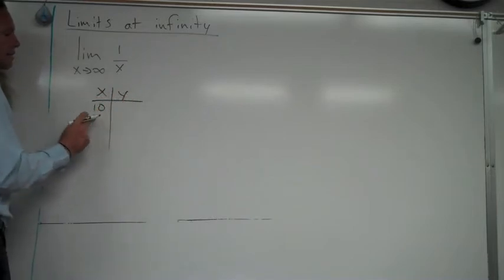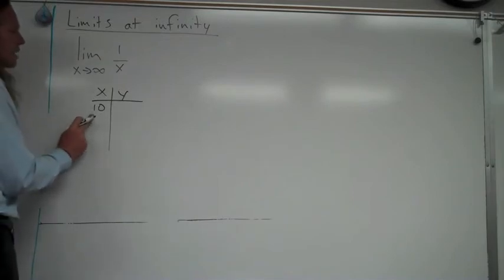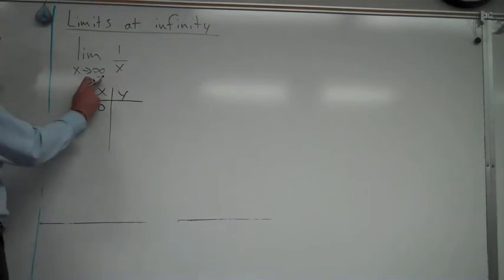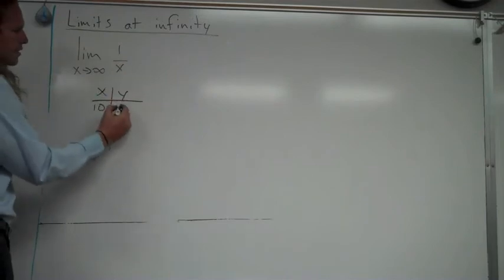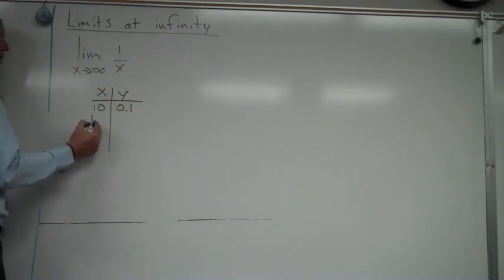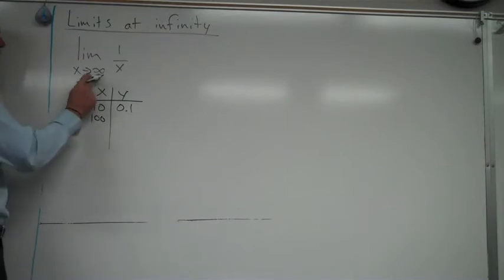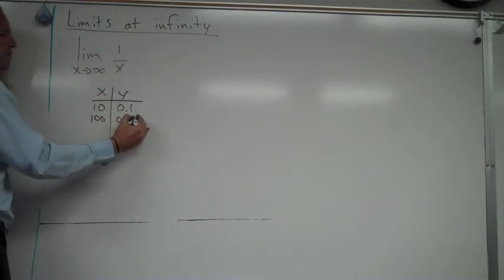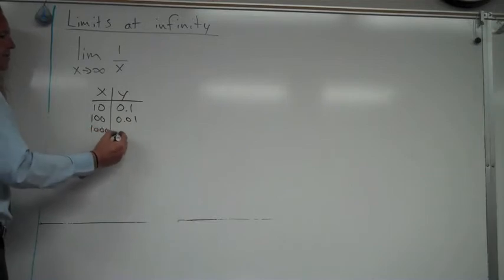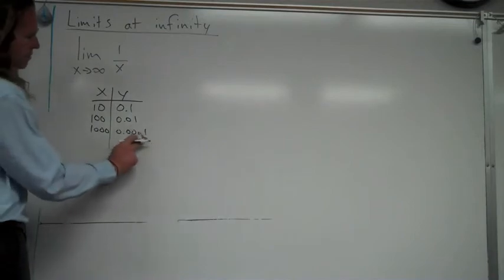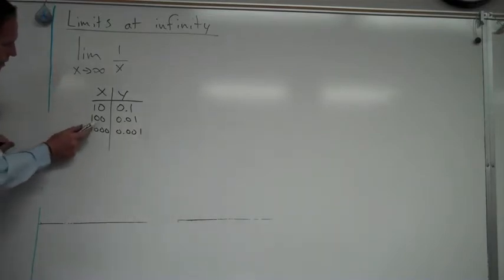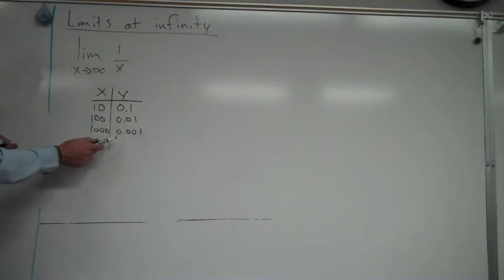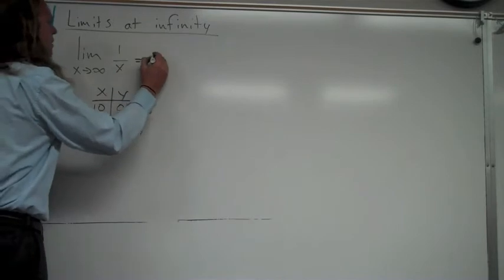Starting at x equals ten — not even close to infinity — if x is ten, that's just one tenth. If I go to a hundred, that's one hundredth. If I plug a thousand in for x, it's going to be one thousandth. And so forth. The x values are growing, the y values are getting smaller and smaller and getting closer and closer to zero. So this limit is equal to zero.